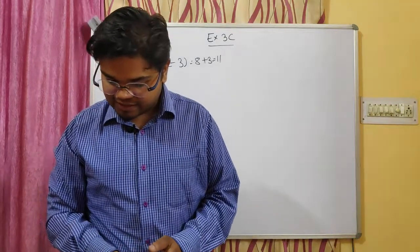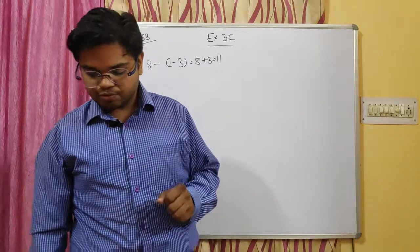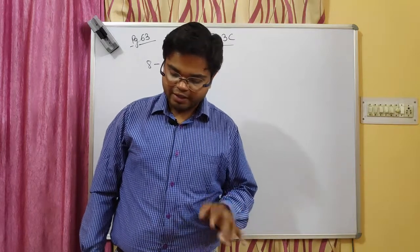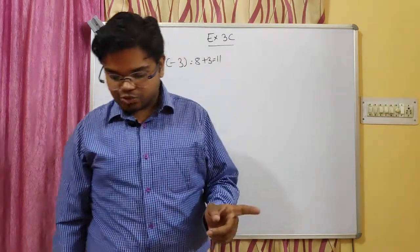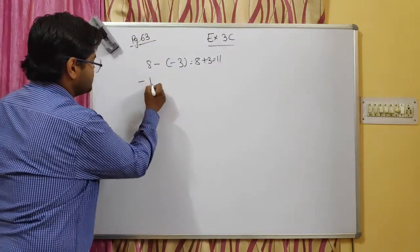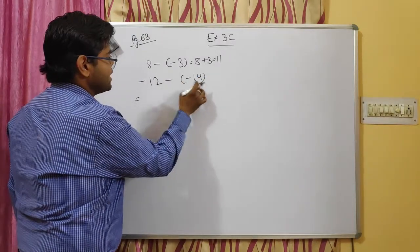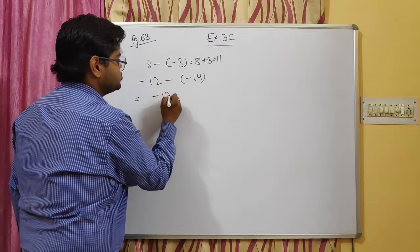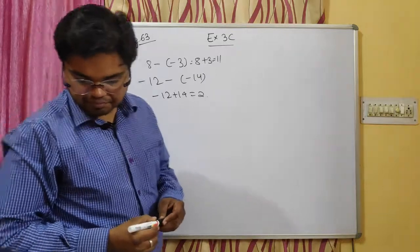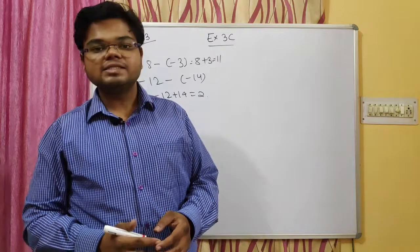Question number two — write each sentence — you will be doing this in the textbook. For example: minus 12 minus of minus 14. If a negative sign is outside the bracket, the minus minus becomes positive. So minus 12 plus 14 equals 2.